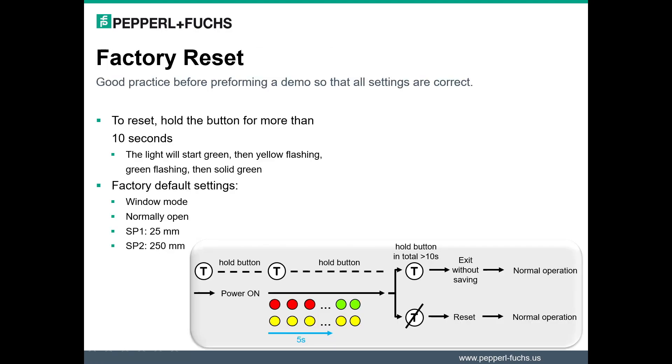Now we will begin discussing what you need to do to program your sensor with push button. First, before you do any programming, it is good practice to factory reset the sensor. This ensures that the settings that you place on the sensor are the ones that you want. To factory reset the sensor, hold the button for more than 10 seconds. The light will start green, flash yellow, flash green, and then become solid green again.